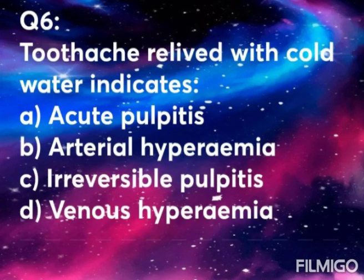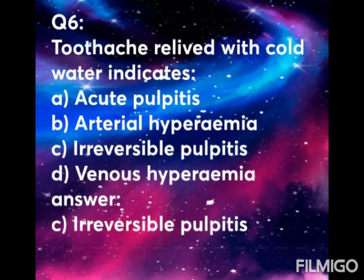Question 6: Toothache relieved with cold water indicates — Option A: acute pulpitis. Option B: arterial hyperemia. Option C: irreversible pulpitis. Option D: venous hyperemia. If cold beverages relieve the toothache, the answer is Option C — irreversible pulpitis. Irreversible pulpitis is relieved with cold.